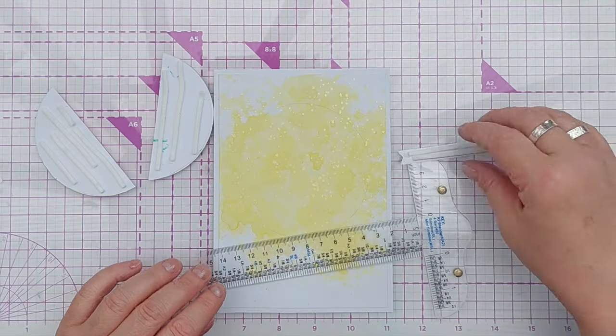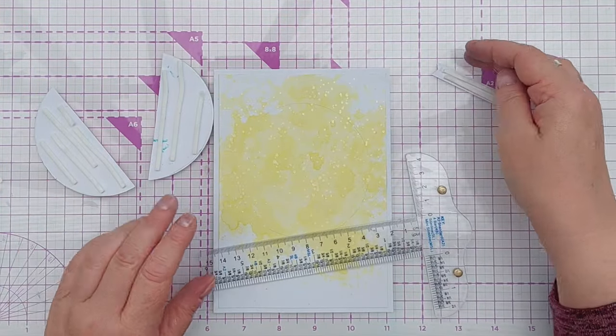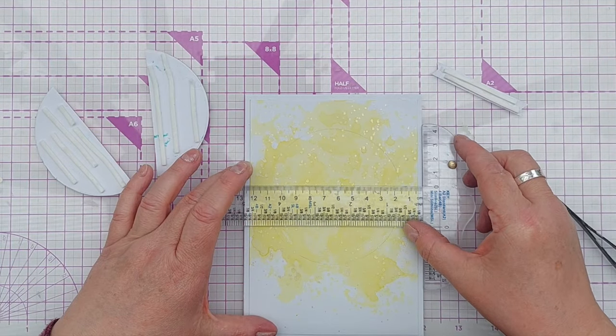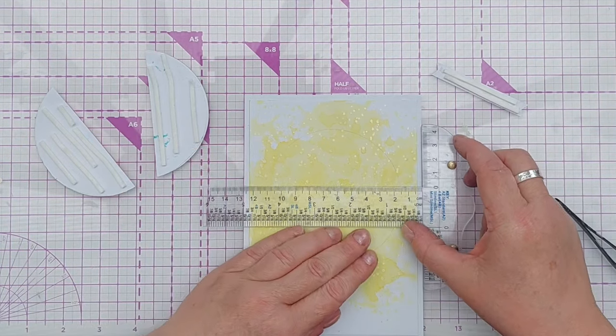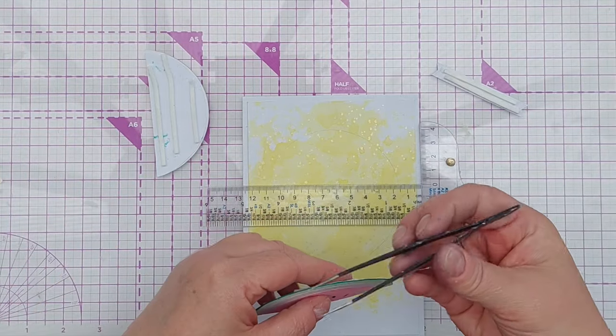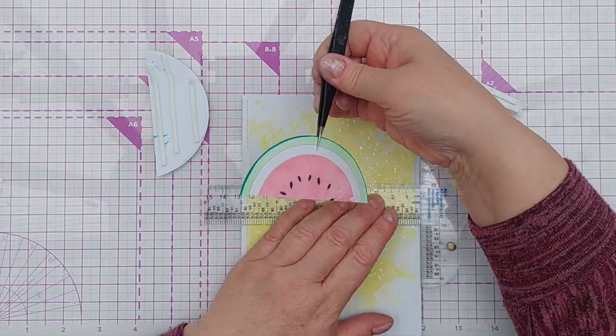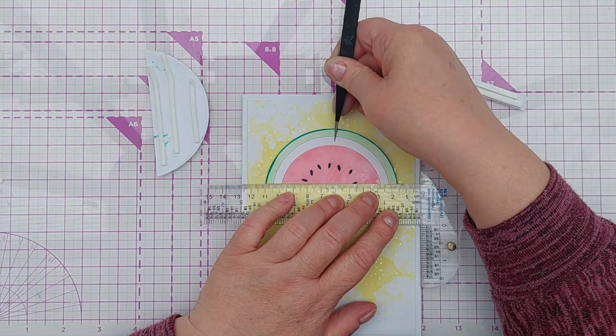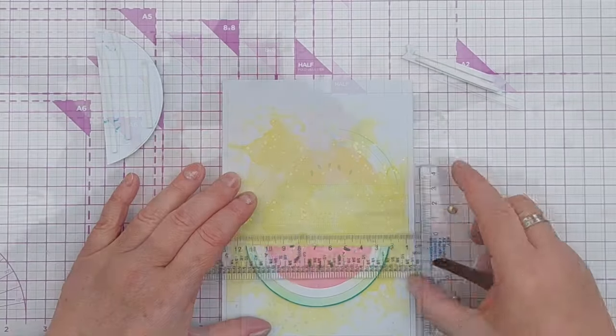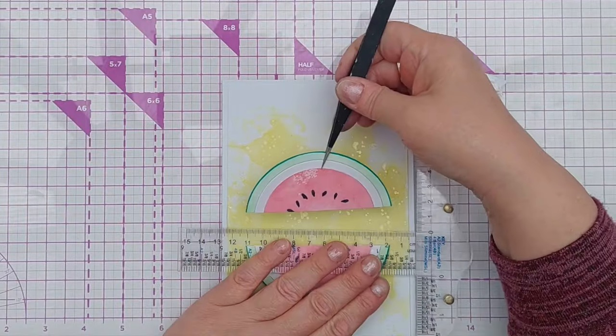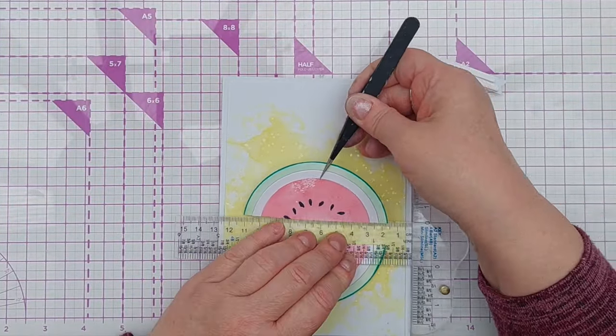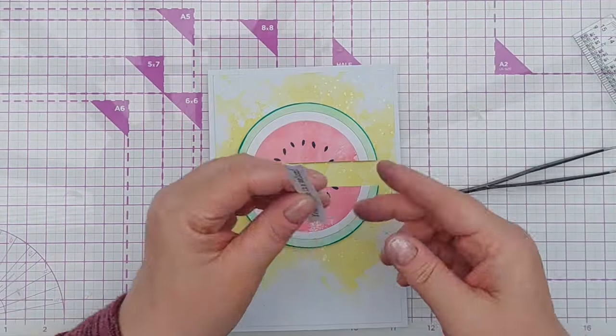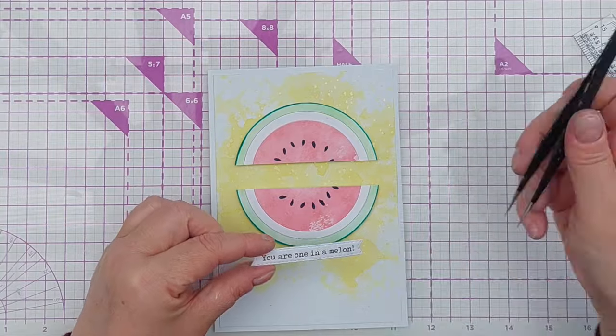I've added foam tape to the back of everything to give it some dimension, and now I'm going to add the top half of the melon and use my T-square ruler to get it straight on there.